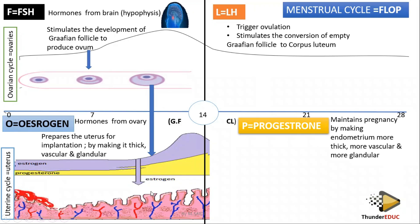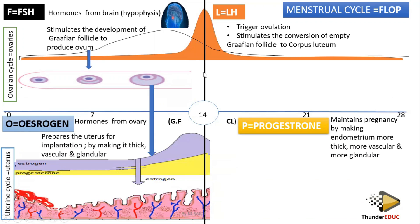Oestrogen is going to start developing the endometrium wall. The endometrium wall starts to develop — it starts to make the uterus thick, vesicular, and granular. Before it was thin, but now it's increasing because oestrogen has started increasing. Once it is now ready, by this time it is ready to receive a baby or to receive a zygote. On day 14, the level of luteinizing hormone increases extremely.